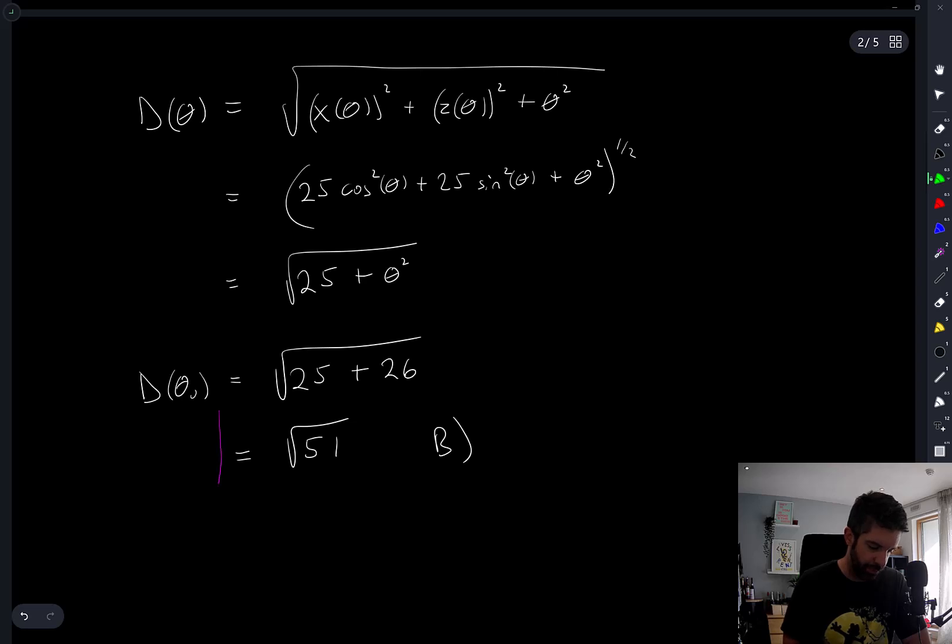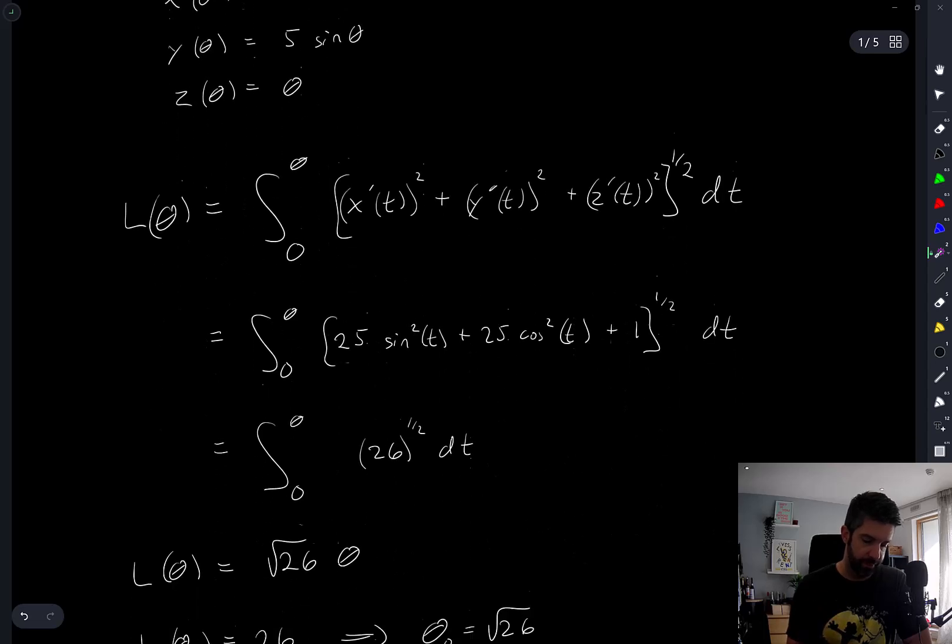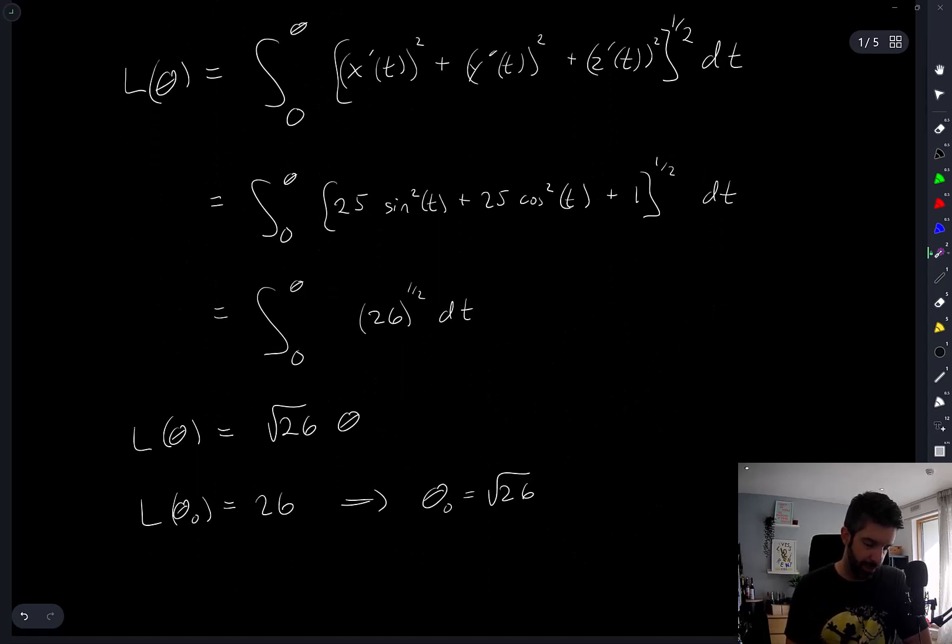So the fact that we went through this step by step and ended up with one of the options given means either I've fallen exactly into the trap that they've set and don't know what it is, or that this is the correct answer. I'm pretty confident in this. I basically just did everything from first principles. It was a nice sanity check that the arc length that this thing travels is linear with respect to theta.